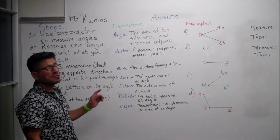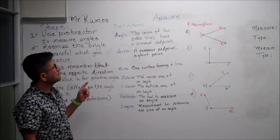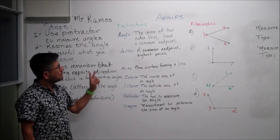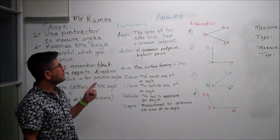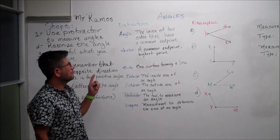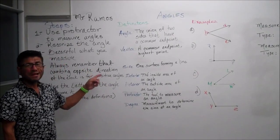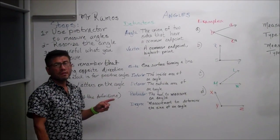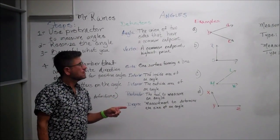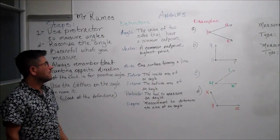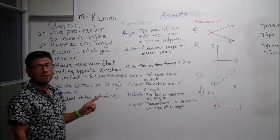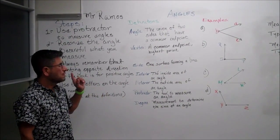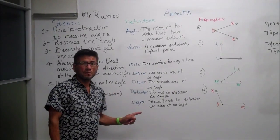Angle: the union of two sides that have a common end point. Vertex: is a common end point or the highest point. Side: one surface forming a line. Interior: the inside area of an angle. Exterior: the outside area of an angle.